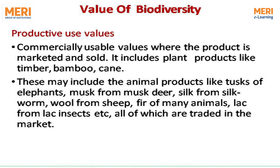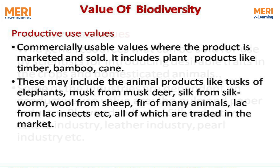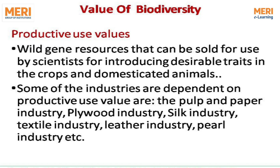Productive use value refers to commercially usable value where the product is marketed and sold. It includes plant products like timber, bamboo, and cane, as well as animal products like tusks of elephants, musk from the musk deer, silk from silkworms, wool from sheep, fur from animals, and lac from the lac insect — all of which are traded in the market. Wild gene resources can also be sold or used by scientists for introducing desirable traits in crops and domesticated animals. Industries dependent on productive use value include pulp and paper, plywood, silk, textile, leather, and pearl industries.